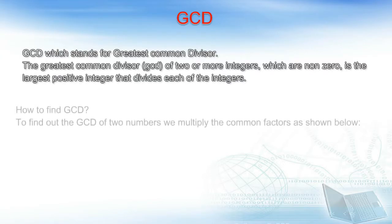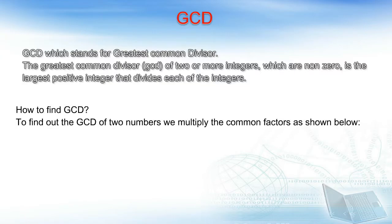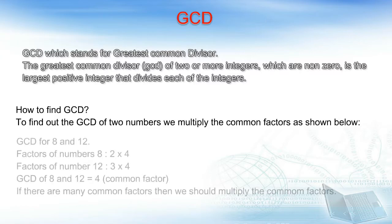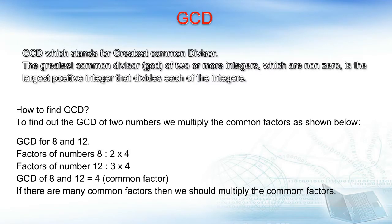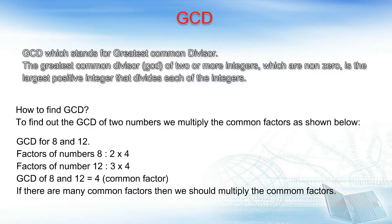Now let's see how to find GCD. To find out the GCD of two numbers we multiply the common factors. Let's take two numbers as 8 and 12. Factors of number 8 are 2 and 4. Factors of number 12 are 3 and 4. GCD of 8 and 12 is equal to 4 — that is the common factor between the two numbers. And if there are many common factors, we should multiply the common factors and that will be your GCD.